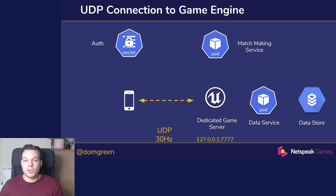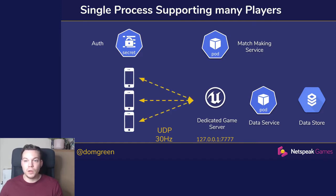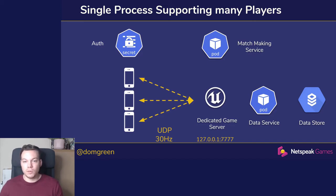When connecting into a game server, the client uses UDP, transferring data backwards and forwards 30 times a second. This is quite a lot of data going over the network. The dedicated server supports not just a single player but many players in the same process. One interesting thing to note: at launch, if an online game goes down, it's often not the dedicated game server under too much stress. Often it's the auth system or the matchmaking service that hasn't been scale-tested — both see a spike in traffic they're not used to.